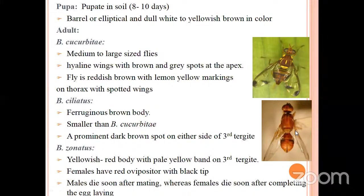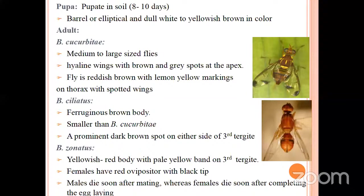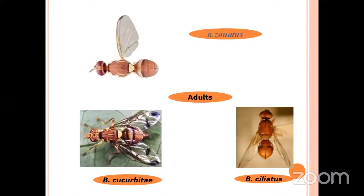Bactrocera ciliatus is ferrugineous brown in color and smaller than cucurbitae. It has a prominent dark brown spot on either side of the third tergite. Bactrocera zonatus is yellowish, having a yellowish-red body with a pale yellow band on the third tergite. The females have a red ovipositor with a black tip. Male dies soon after mating, whereas the female dies soon after completing egg laying. These are the pictures of the cucurbit flies: Bactrocera cucurbitae, Bactrocera ciliatus, and Bactrocera zonatus.